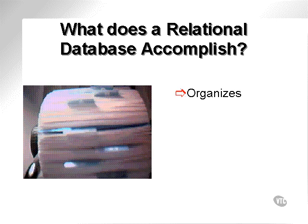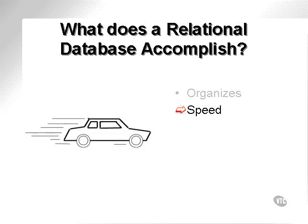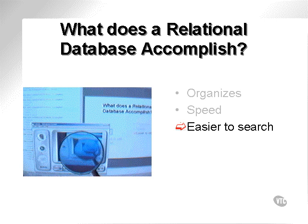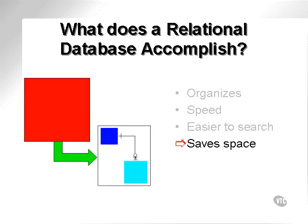What does a relational database accomplish? It organizes, or allows organization of, data and information. It increases the performance, or the speed, of data access, because you can access parts of that information rather than accessing everything all at once. It's easier to search — it allows you to search within specific objects, such as venues or shows, rather than shows within venues all at the same time. It saves space, as duplicated information is removed into separate objects.